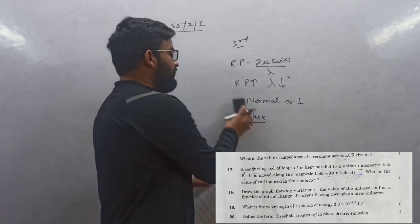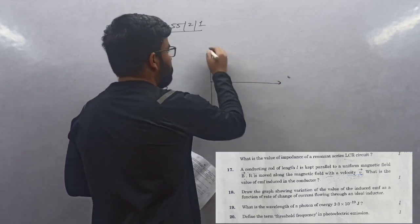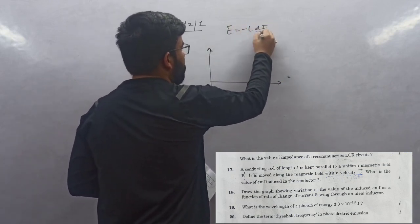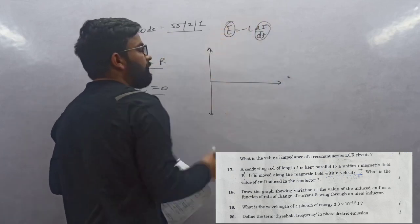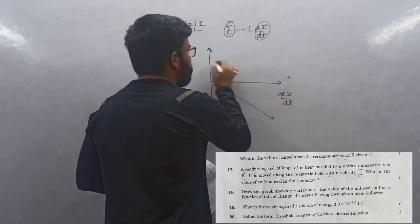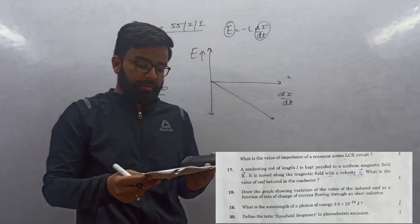Question 18: Draw graph showing variation of EMF induced with rate of change of current. EMF induced is E = -L·dI/dt. This formula we have studied. It is directly proportional to dI/dt, but in fourth quadrant because its direction is opposite, represented by negative sign.